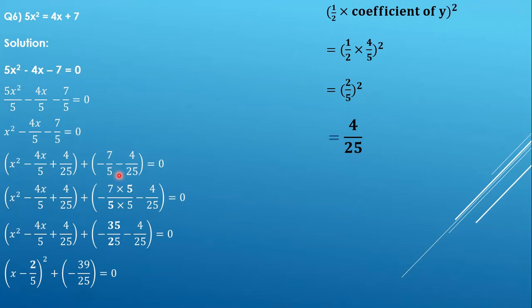There are two ways to handle this: the first method is to cross multiply, as seen in previous videos, or you can make the denominators the same. In this case we can make 5 into 25 by multiplying numerator and denominator by 5, giving us 7×5 over 5×5, which is -35/25 minus 4/25.